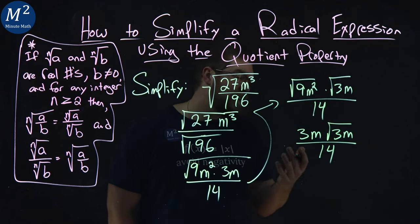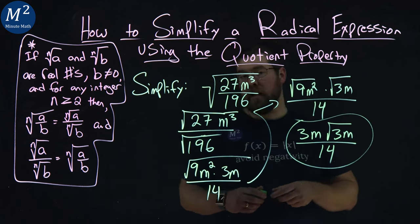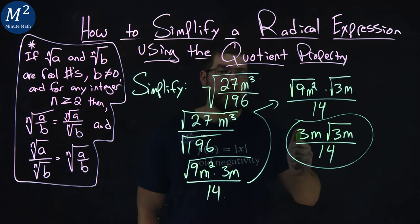And there's nothing else we can do to simplify this. So we're left with the final answer here of 3m times the square root of 3m over 14.